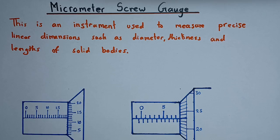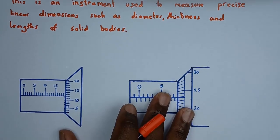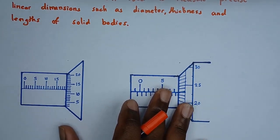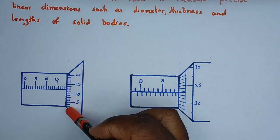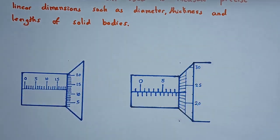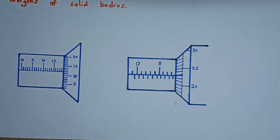I'm just showing the part of the scales, not the full micrometer screw gauge. There are two types of scales: this is known as the main scale, and this is the thimble. I'll show you how to read measurements on these instruments. I have about six examples, and by the time we're done I hope you'll be able to read measurements carefully and correctly.